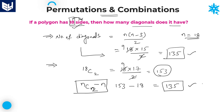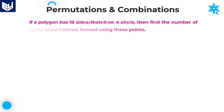Here also you get the same result. Either you can use nC2 minus n, or you can use the direct formula n(n-3)/2. Next question.